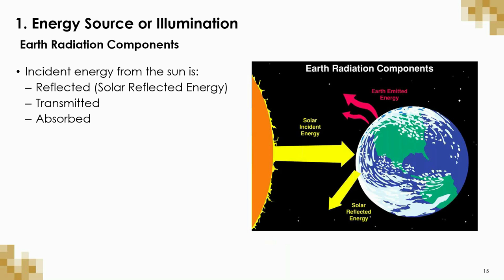First there is the energy source or illumination, and this allows the subject to be visible to the satellite. This energy is often light or radiation produced by the sun, as seen in the diagram on the right. Since the sun is constantly producing energy, this is a great source of light for remote sensing. Other energy sources can be used in this process too, like a satellite that produces its own energy, but this will be discussed in more detail later in the presentation.